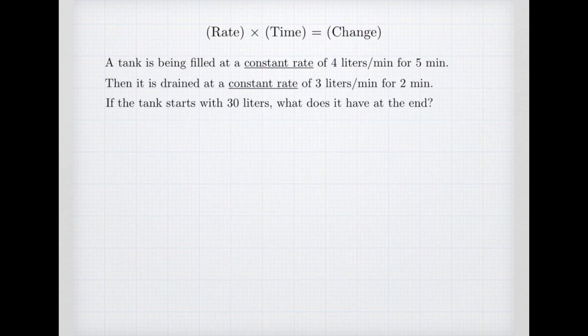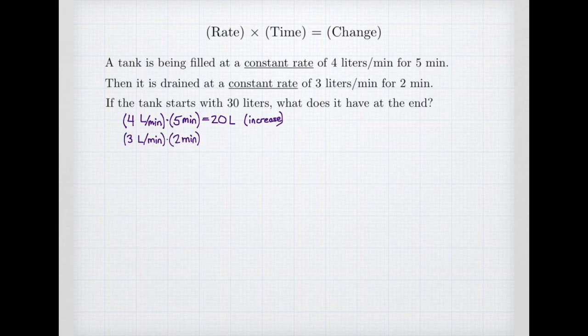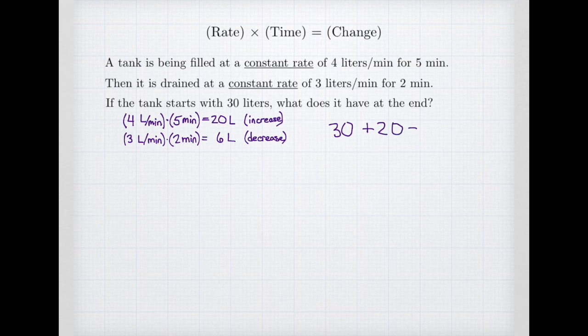You probably multiplied 4 liters per minute times 5 minutes, and that gave you an increase of 20 liters. Then you probably took 3 liters per minute and multiplied it by 2 minutes, and that gave you a decrease of 6 liters. With those two calculations, you take your starting volume of 30 liters, add the 20 liters that were poured in, subtract the 6 liters that are lost, and we discover that we have a total of 44 liters.